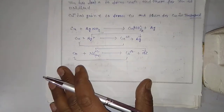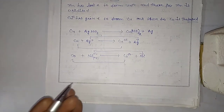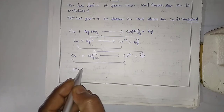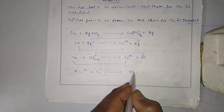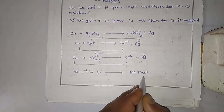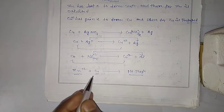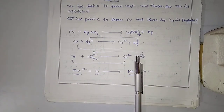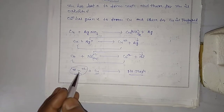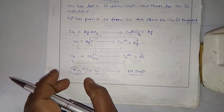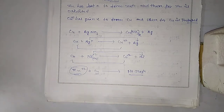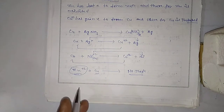Now suppose we take a zinc sulfate or zinc nitrate solution — that is, Zn²⁺ — and place a copper wire into it. There will be no reaction. Why? Because zinc metal is more reactive than copper. The replacement of a more reactive metal by a less reactive metal is not possible. So the colorless solution of zinc sulfate remains colorless — no effect.